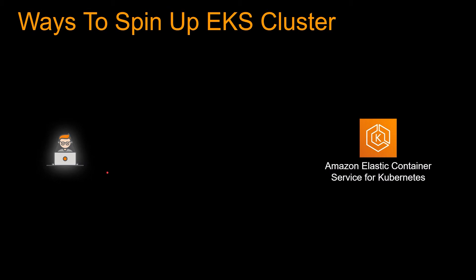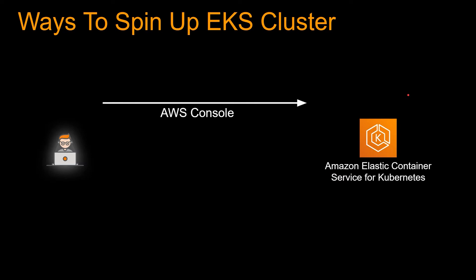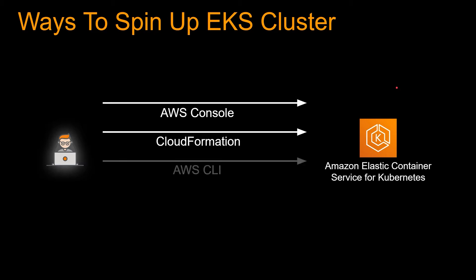On the left is you, the almighty user, and on the right is our EKS cluster. There are several ways to spin up this cluster. First, there's the AWS Console. Second, you can write a CloudFormation template and run it to spin up the cluster. Third, you can use AWS CLI commands to create an EKS cluster.